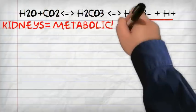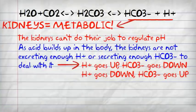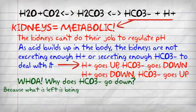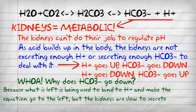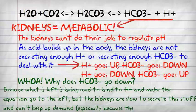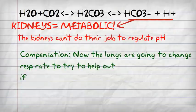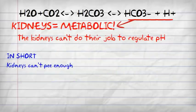On the other side, we have the kidneys. If the problem is metabolic, the kidneys can't do their job to regulate pH. As acid builds up in the body, the kidneys aren't secreting enough hydrogen or secreting enough bicarbonate. The bicarbonate goes down because what's left in the system is being bound to the free hydrogen, making the equation shift left so the lungs can compensate. The kidneys are too slow to secrete bicarbonate to keep up with demand, especially because they're sick. To compensate, the lungs change respiration — if acidic, they breathe more; if alkalotic, they breathe less.